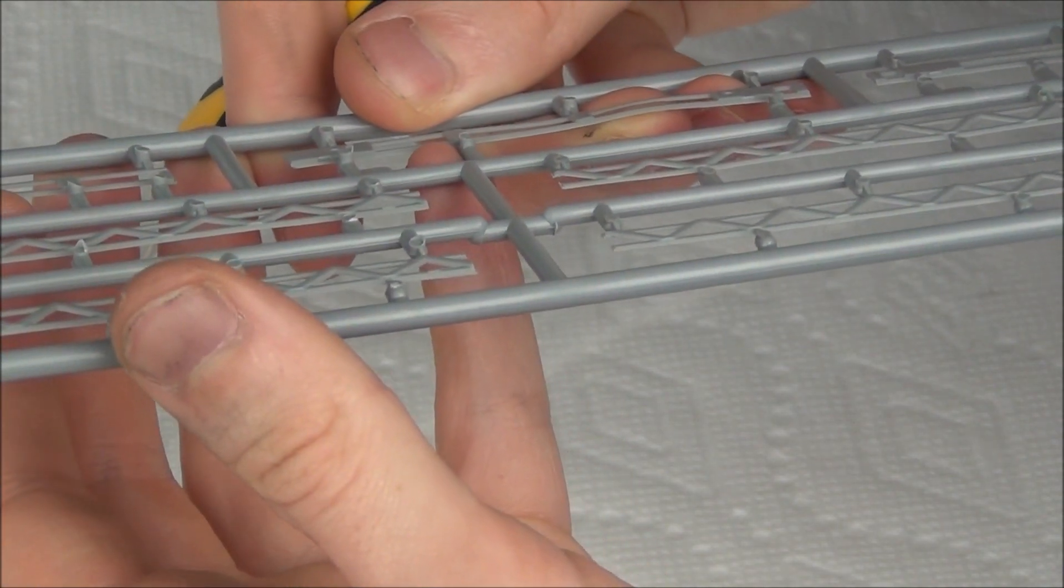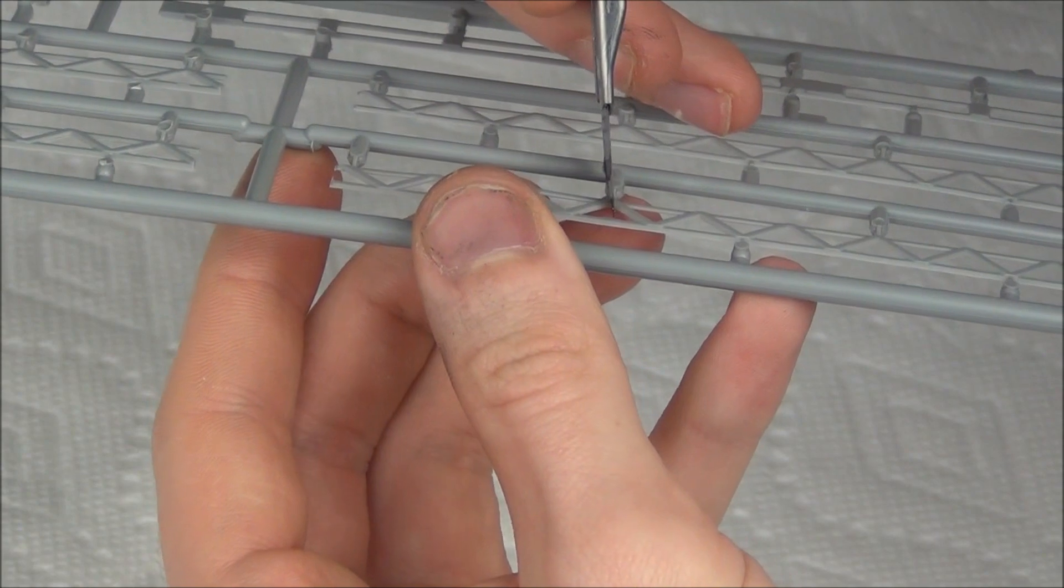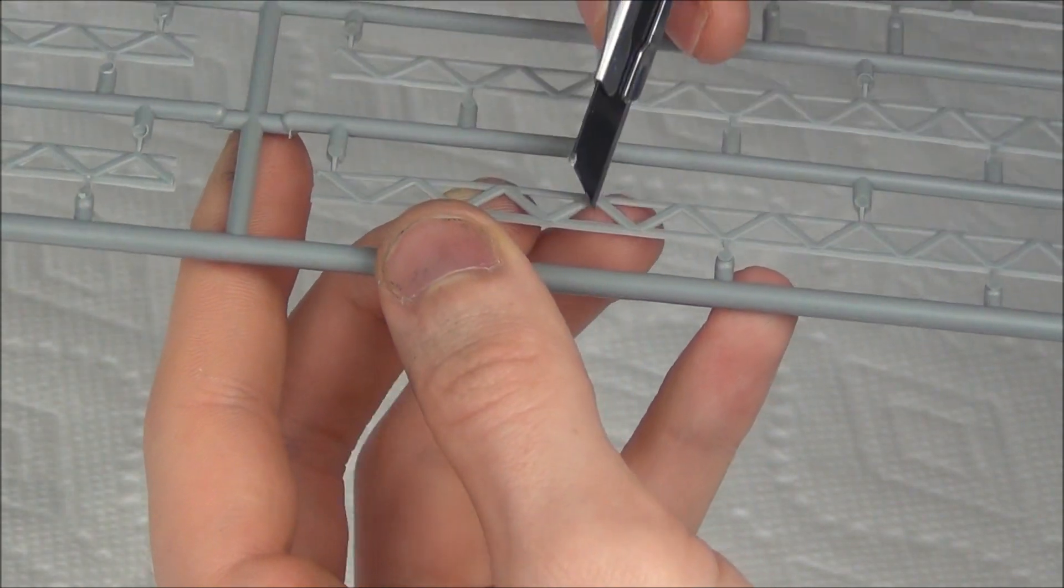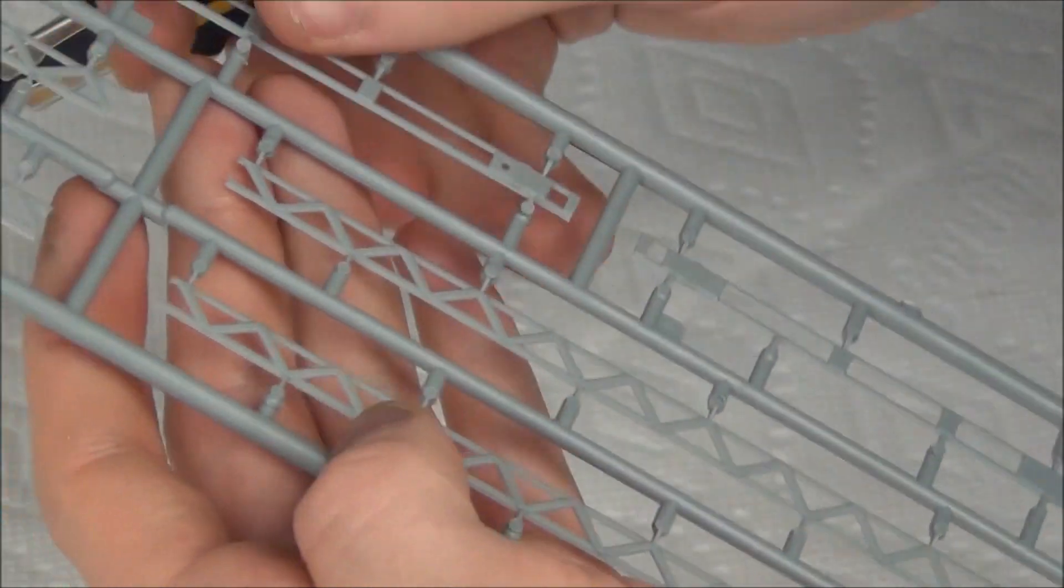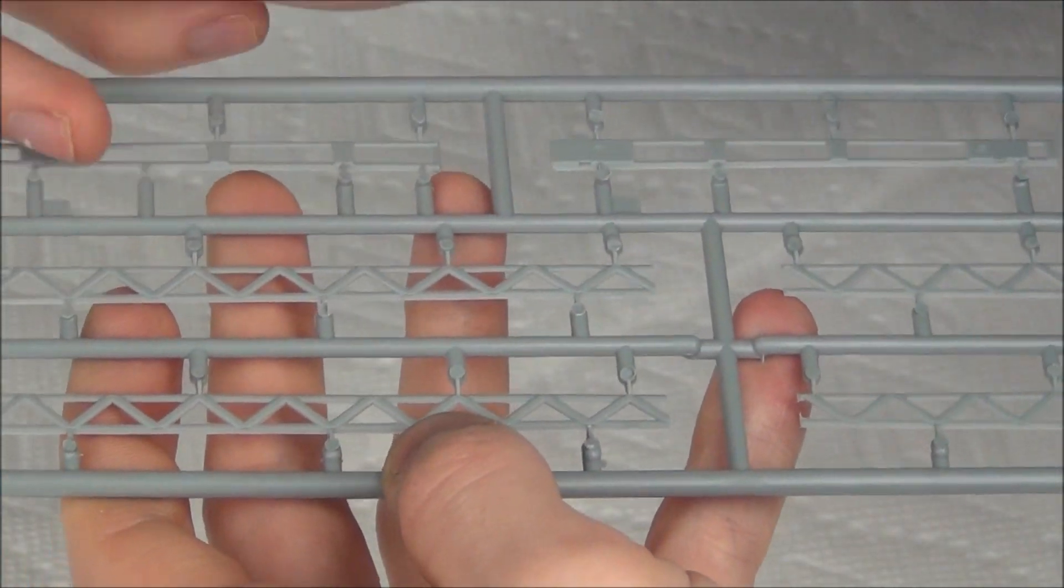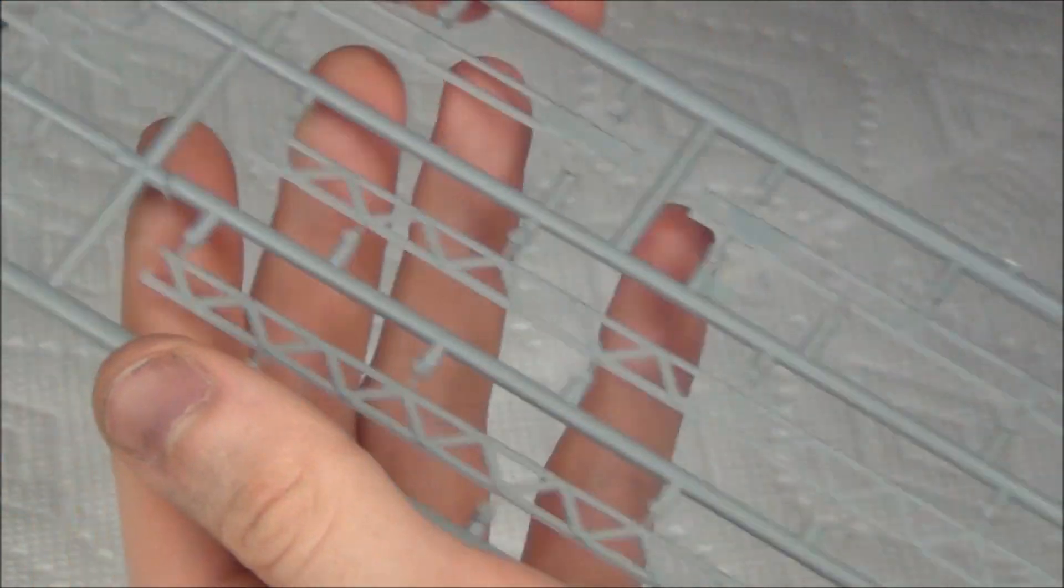Looking at the edges here, I don't really see any flash or anything. There might be a little bit right there, I'm not sure if that's actually the part though. But overall, these look very nicely molded. We do have attachment points along the length of them there, but nothing on the inside. It looks like we'll be able to preserve most of the detail when we actually build the thing up.